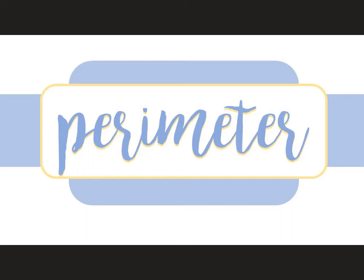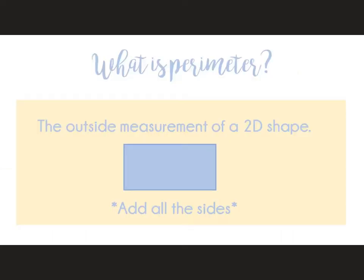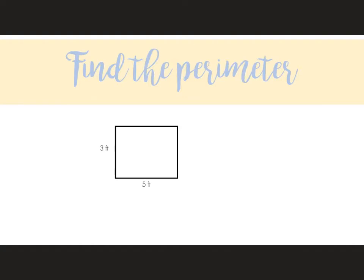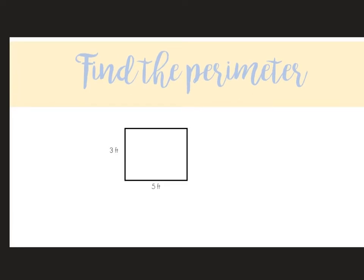This video covers perimeter. Perimeter is the outside measurement of a two-dimensional shape, so you're going to add up all the sides. One important thing to remember is that opposite sides of a rectangle are the same, so this side would be three feet as well, and this side would be five feet as well.